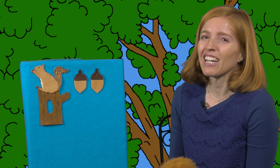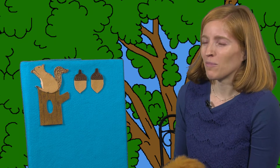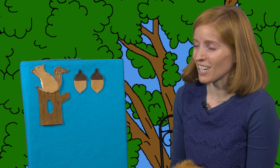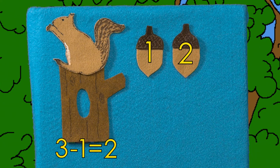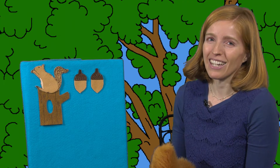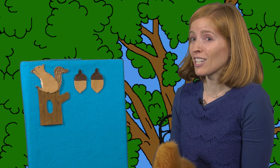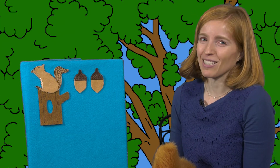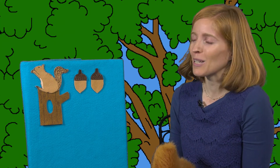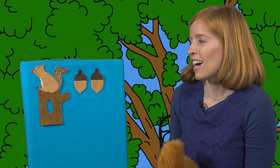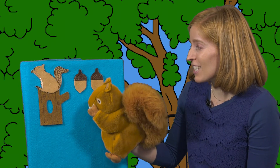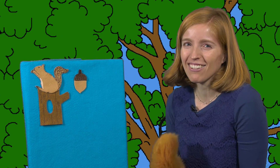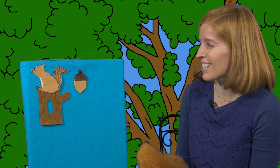Uh-oh. We had three acorns. Mr. Bushytail got another one. How many are left? One, two. Two little acorns growing in a tree, teasing Mr. Bushytail, can't eat me. Along comes Mr. Bushytail quiet as can be and snatches that acorn right out of the tree.